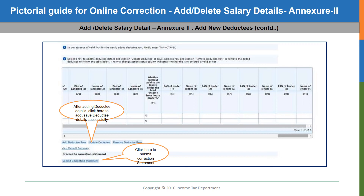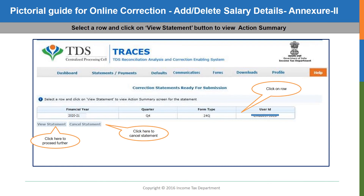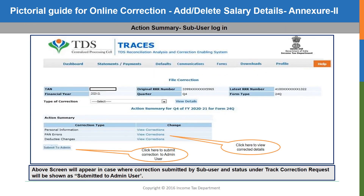Now after adding the details, click on the update button for saving the data. Then click on the submit correction statement button at the bottom of the page to submit the correction statement. On successful submission of the correction statement, click on the hyperlink corrections ready for submission to proceed further. The correction statement details such as the financial year, the quarter, the form type, etc. will be displayed on the screen. Select the row and click on the view statement button to proceed further. On doing so, the file correction page will be displayed. You can view corrections and make necessary changes at this stage if needed. You can submit the correction statement using the submit to admin button in case you are a sub-user. In case you are the admin user, you will see just the submit button. Click on the submit button to proceed further.